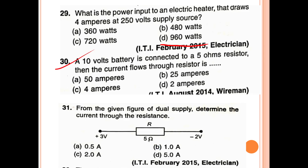30th question: A 10 volt battery is connected to a 5 ohm resistor. What is the current flowing through the resistor? Using Ohm's law, current equals V by R equals 10 by 5. The answer is 2 ampere.